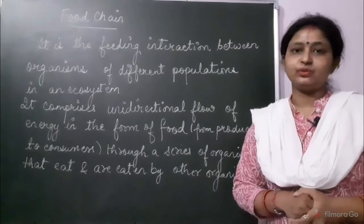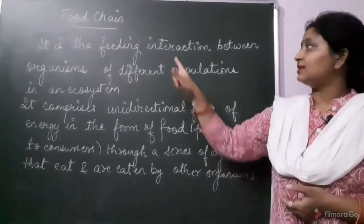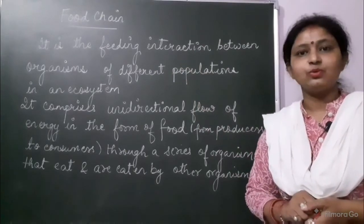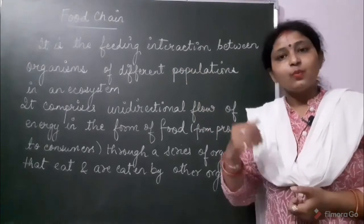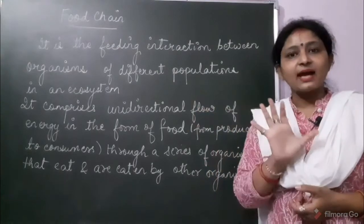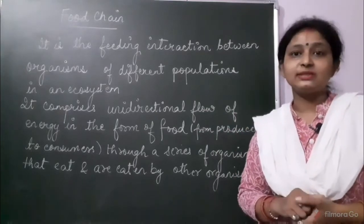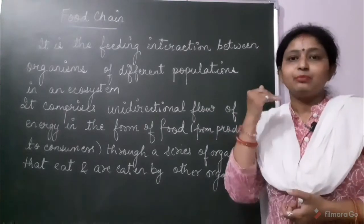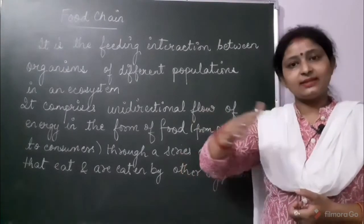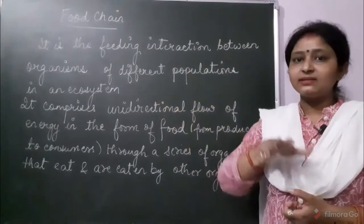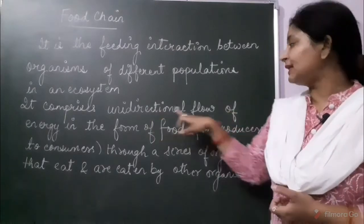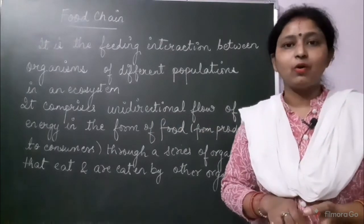What do you understand by food chain? Food chain is the feeding interaction between organisms of different populations in an ecosystem. In an ecosystem, various populations — various species — are present. This is a feeding interaction between all those species. Like producers are eaten up by herbivores, and herbivores are eaten up by consumers. So this is a series in which one organism is eaten by another. In a food chain, unidirectional flow of energy occurs in the form of food.